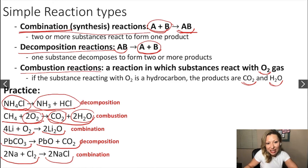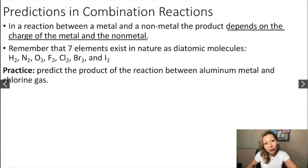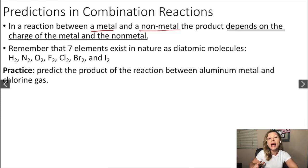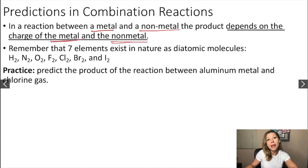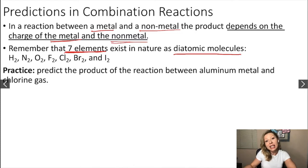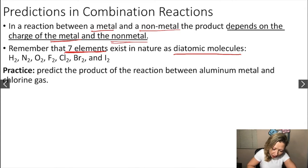Let's take a look at some predictions in these reactions. When we have a combination reaction, we can figure out the product if the reaction is between a metal and a nonmetal. In order to figure out these types of reactions, we have to remember that there are seven elements in nature that exist as diatomic molecules, meaning they exist as a molecule formed from two atoms.